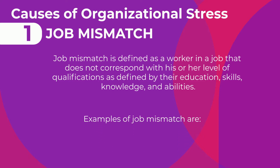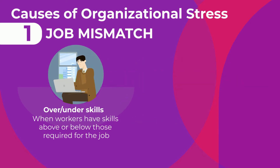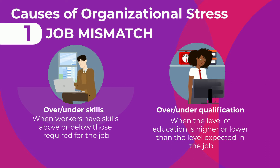Examples of job mismatch are over or under skills. This is when workers have skills above or below those required for the job. The next example is over or under qualification. This is when the level of education is higher or lower than the level expected in the job.